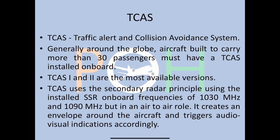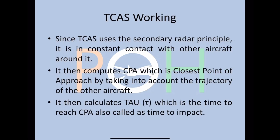TCAS uses the secondary radar principle, using the SSR which is already on board. The frequencies used are 1030 and 1090 megahertz. The important difference is that it's using air-to-air communication. If you remember, SSR was using ground-to-air and air-to-ground, but TCAS is specifically air-to-air. So it creates an envelope around the aircraft and triggers audio-visual indications accordingly.